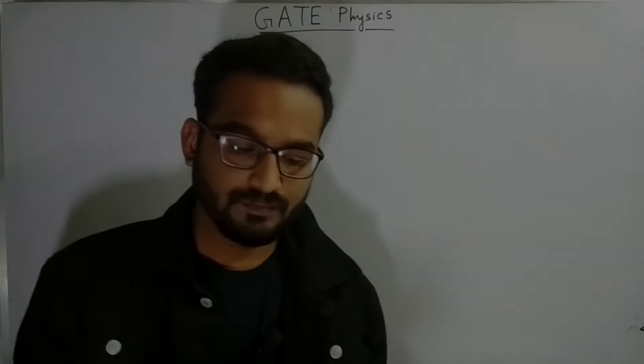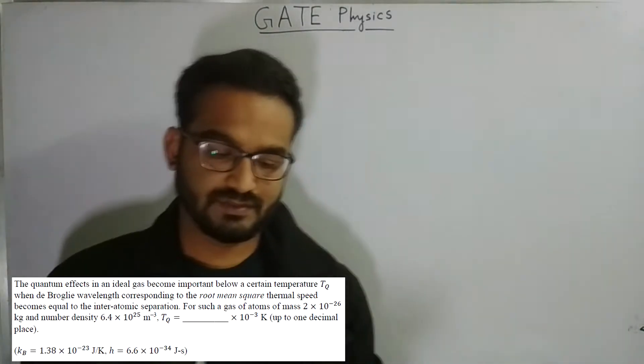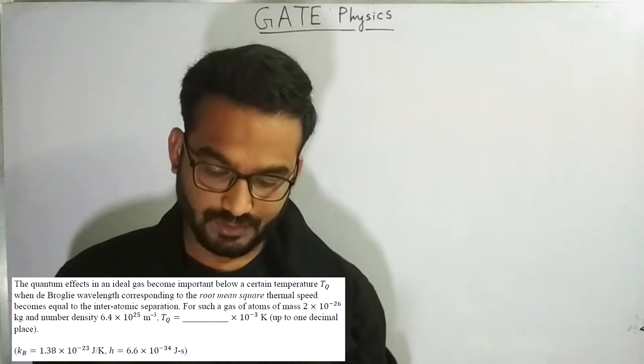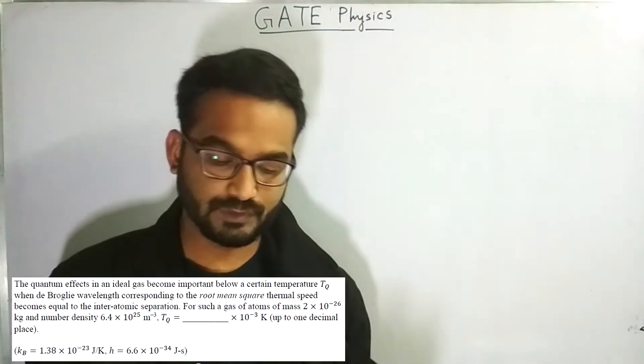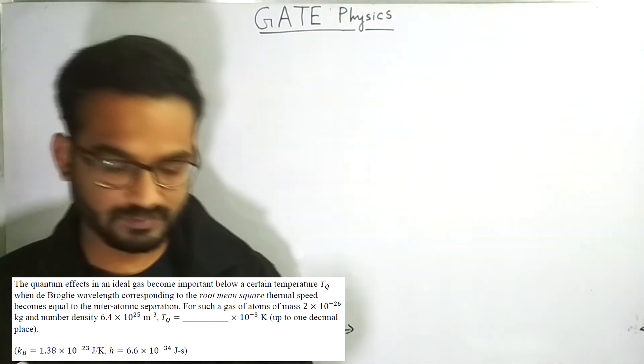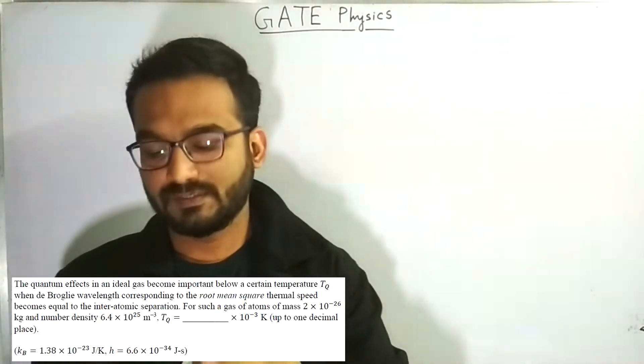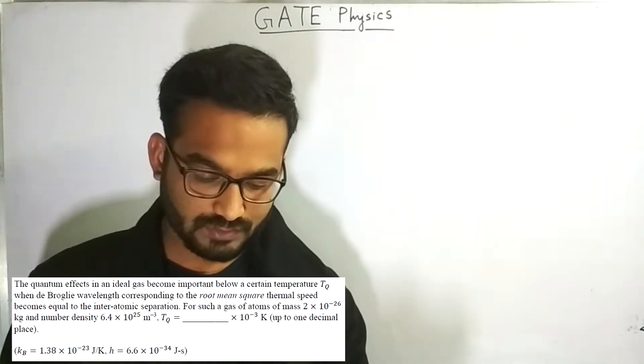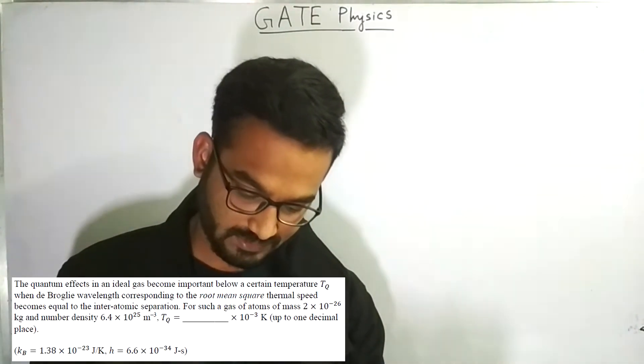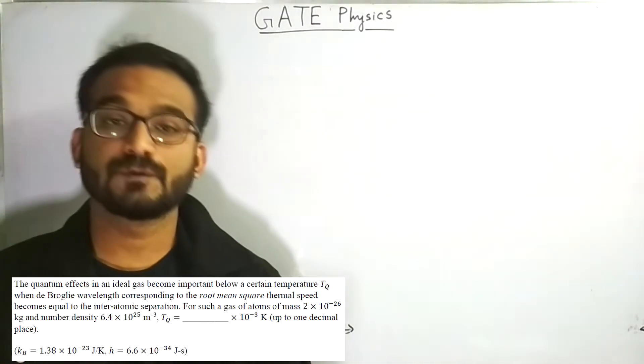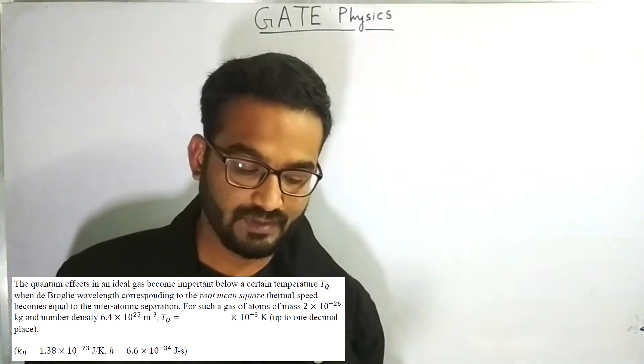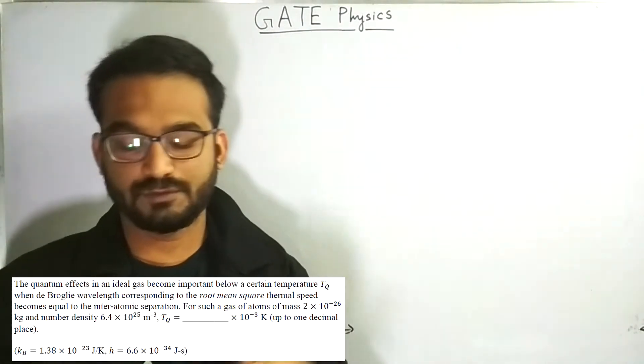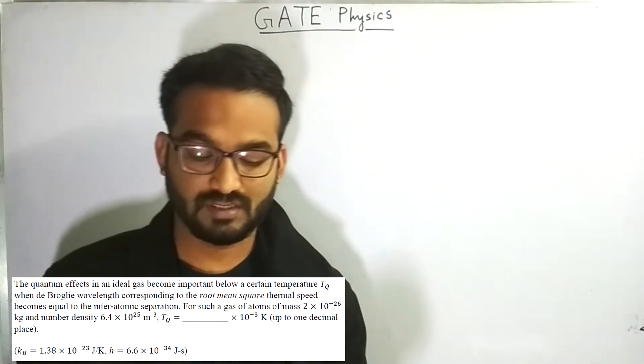Let's solve the problem. The problem reads: the quantum effects in an ideal gas become important below a short temperature Tq when de Broglie wavelength corresponding to the root mean square thermal speed becomes equal to the interatomic separation. For such a gas of atoms of mass 2 into 10 to the power minus 26 kilogram and number density 6.4 into 10 to the power 25 per meter cube, Tq is equals to dash into 10 to the power minus 3 Kelvin up to 1 decimal.